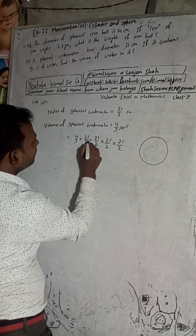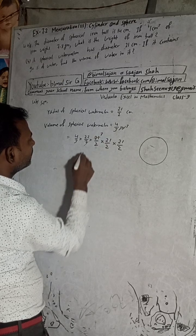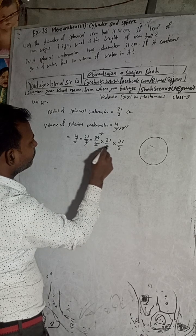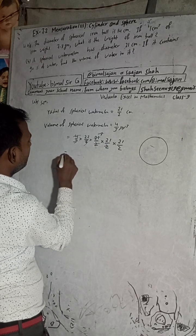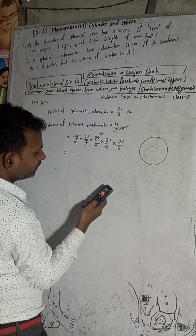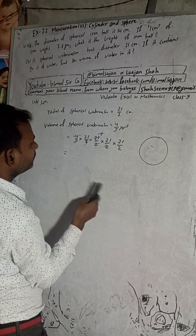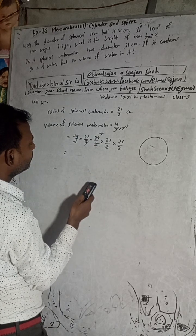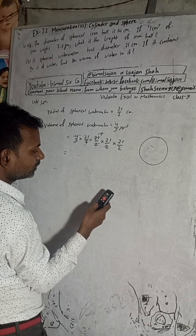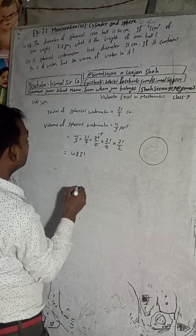Now simplifying: the 7 cancels with 21 (7 threes are 21), the 3 cancels, the 2s cancel with 4, giving 21 × 21 × 21 × 22 divided by remaining terms. After all cancellations, the volume of the sphere comes out to 4851 cm³.